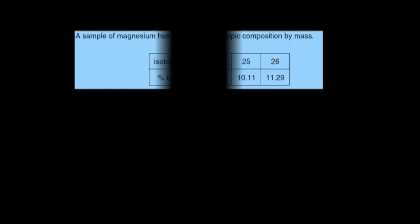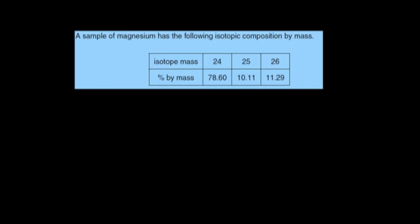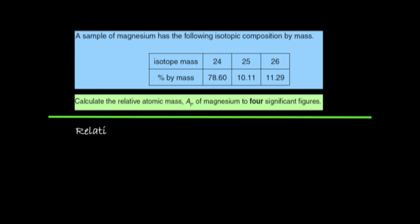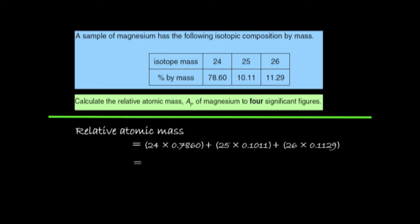For example, magnesium has three isotopes — 24, 25, and 26 — so the mass spectrum shows three peaks. Using the given abundances, we multiply each isotope mass by its relative abundance and sum the results to find the relative atomic mass of magnesium to four significant figures: 24.33.